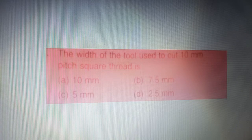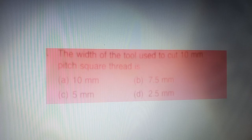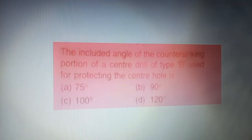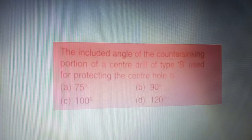Next question: the width of the tool used to cut a 10 mm pitch square thread is — four options are given on your screen. The correct answer is option C — 5 mm.